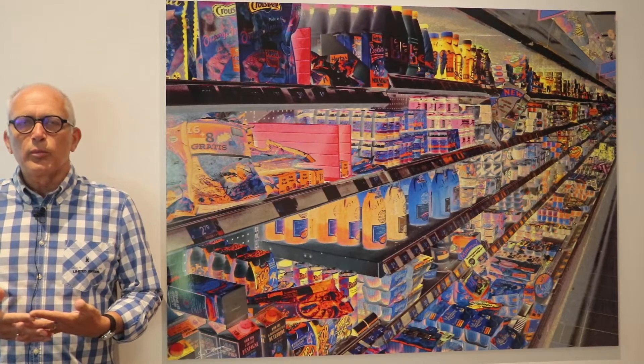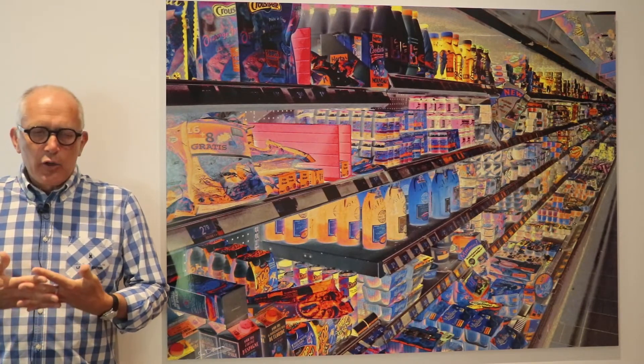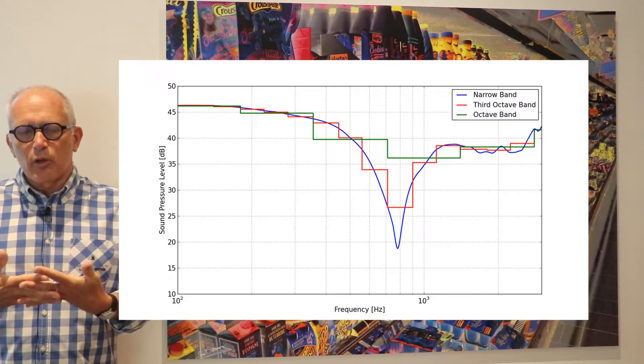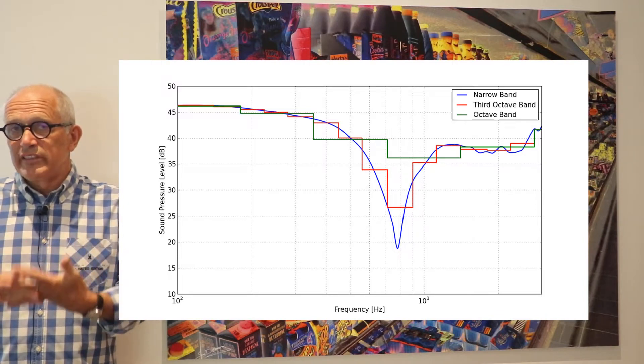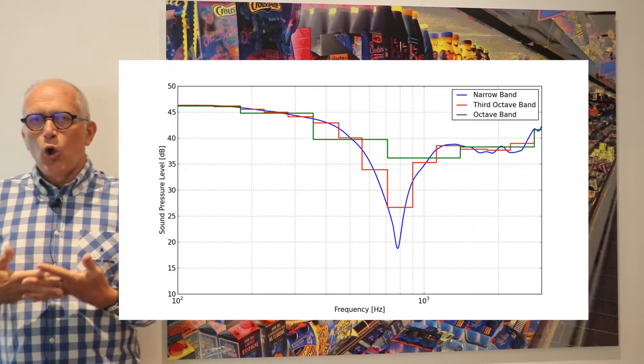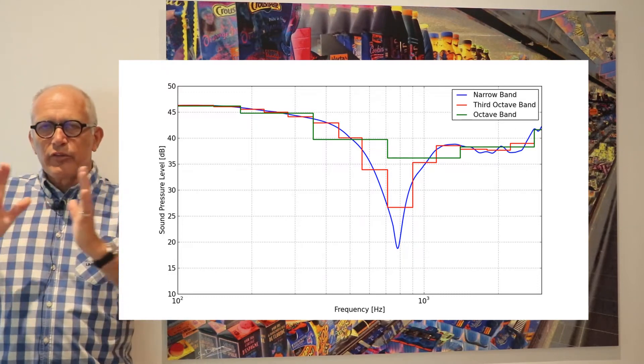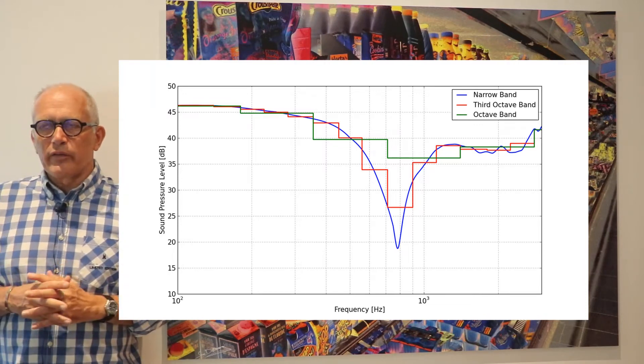One last thing I want to talk about is band levels. You have two ways of looking at the spectrum of an acoustic source. You may look at the full detailed spectrum, that is called the narrow band spectrum, or you can group data by frequency bands of different widths.